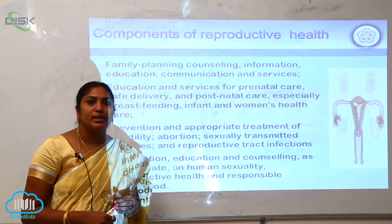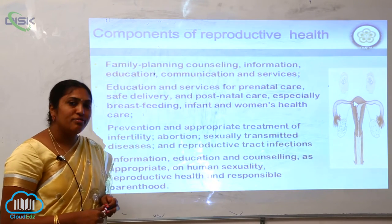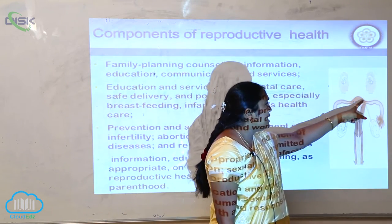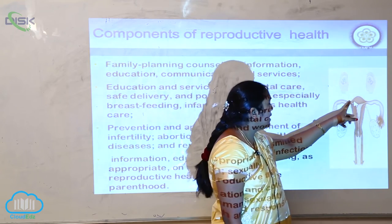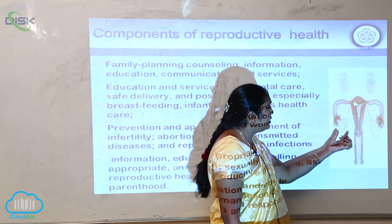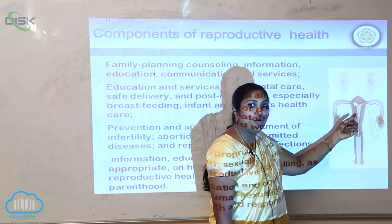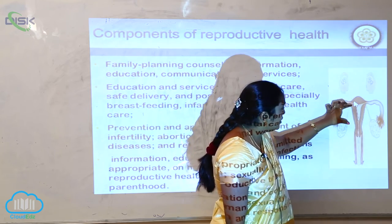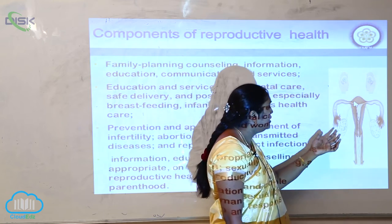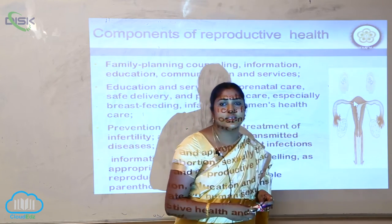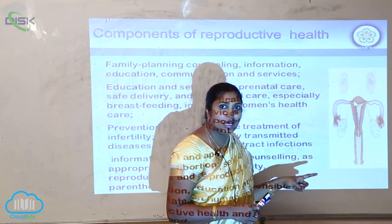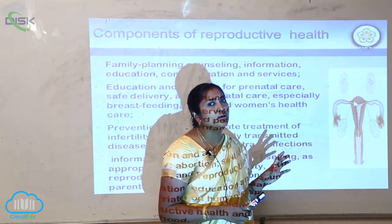What are the components of reproductive health? If you look into the female reproductive system, this is the female reproductive system which has the fundus, fallopian tubules, and they are attached with the ovaries via the fimbria and ovarian tissues. This is the uterus, followed by the cervix and vagina. The uterus consists of three layers: the endometrium, perimetrium, and myometrium.